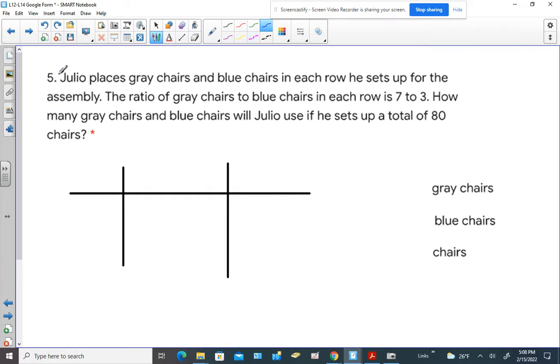Hey everybody, Mrs. Bianchi. We're looking at number five. Julio places gray chairs and blue chairs in each row he sets up for the assembly. The ratio of gray chairs to blue chairs in each row is seven to three. How many gray chairs and blue chairs will Julio use if he sets up a total of 80 chairs?